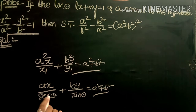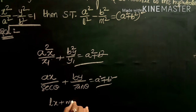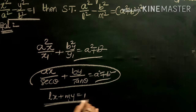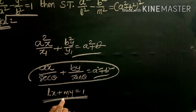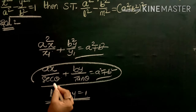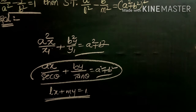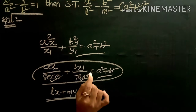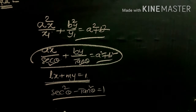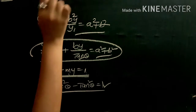Since the given equation of normal is lx + my = 1, we use the second formula. Both equations represent the same normal, so we equate the ratio of coefficients: x-coefficient / x-coefficient = y-coefficient / y-coefficient = constant / constant. From that, we find the values of sec θ and tan θ, then substitute into the identity sec²θ - tan²θ = 1. After simplification, we get the required answer.